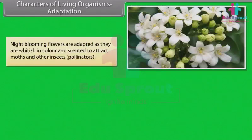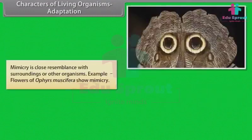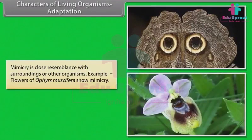Night-blooming flowers are adapted as they are whitish in color and scented to attract moths and other insects, pollinators. Birds have wings for flight, boat-shaped body, beak, pneumatic bones and feathers. Mimicry is close resemblance with surroundings or other organisms. For example, flowers of Ophrys muscifera show mimicry.